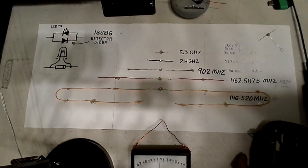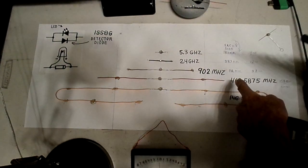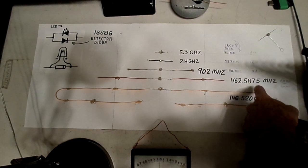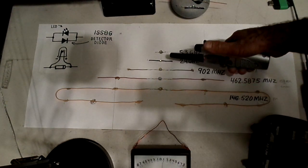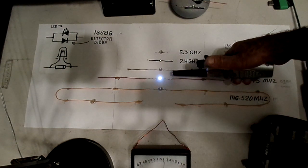I'm also able to take my FRS radio that's on channel 2. It's about 462 MHz. I can transmit near this antenna. You'll notice it doesn't light any of the others except for this one that it's resonant with.